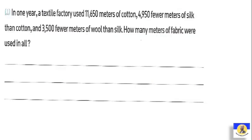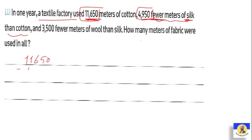In one year, a textile factory used 11,650 meters of cotton and 4,950 fewer meters of silk than cotton. So this number is less than cotton. If cotton is 11,650, silk will be 11,650 minus 4,950. So 16 minus 9 equals 7, and 10 minus 4 equals 6. So the silk is 6,700 meters.